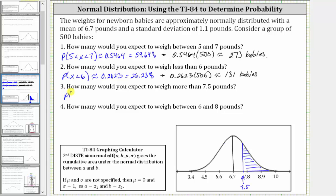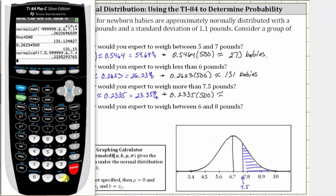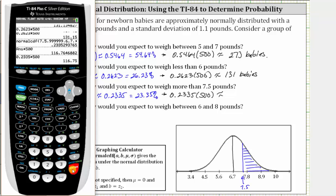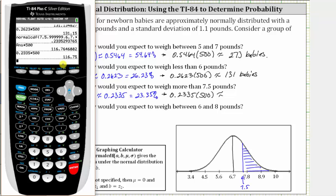Which we indicate as the probability that x is greater than 7.5 — approximately 0.2335, which is 23.35%. To find 23.35% of 500 babies, we multiply 0.2335 and 500. It's faster just to press times 500, but we can also enter 0.2335 times 500. To the nearest baby, both give us approximately 117 babies.